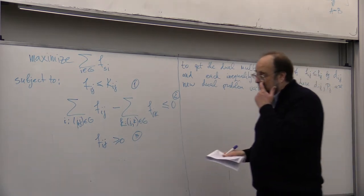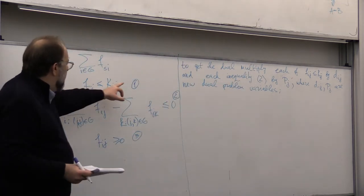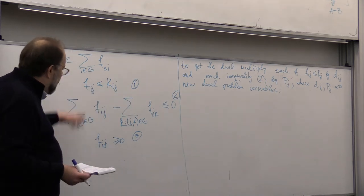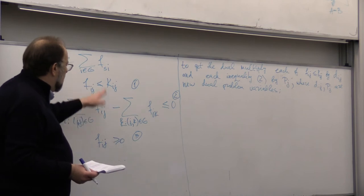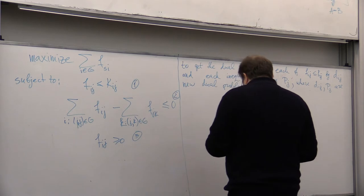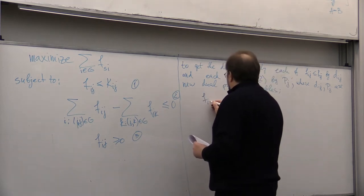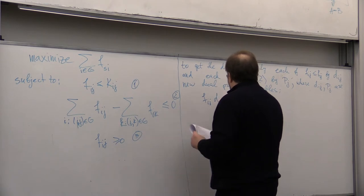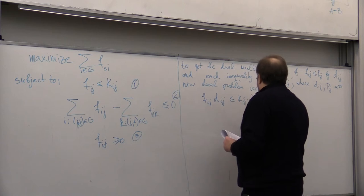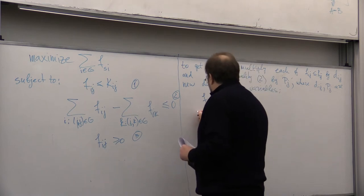So, remember how we got the dual. We got the dual by multiplying each of these inequalities by new variables and summing up all the inequalities. So, if you do that, what do you get?